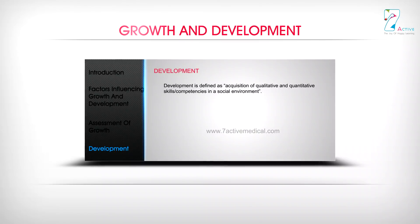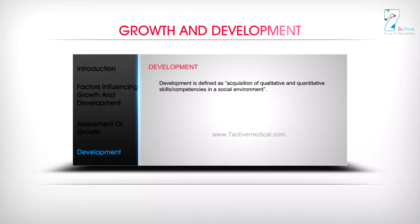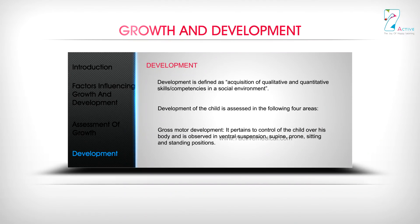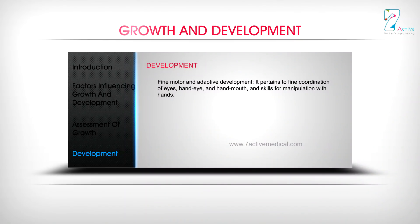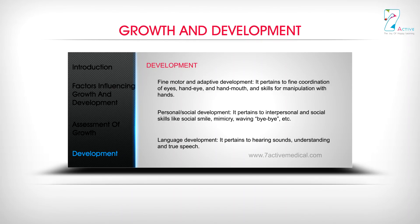Development is defined as acquisition of qualitative and quantitative skills or competencies in a social environment. Development of the child is assessed in four areas: Gross motor development pertains to control of the child over his body, observed in ventral suspension, supine, prone, sitting, and standing positions. Fine motor and adaptive development pertains to fine coordination of eyes, hand-eye, and hand-mouth, and skills for manipulation with hands. Personal or social development pertains to interpersonal and social skills like social smile, mimicry, waving, bye-bye, etc. Language development pertains to hearing sounds, understanding, and true speech.